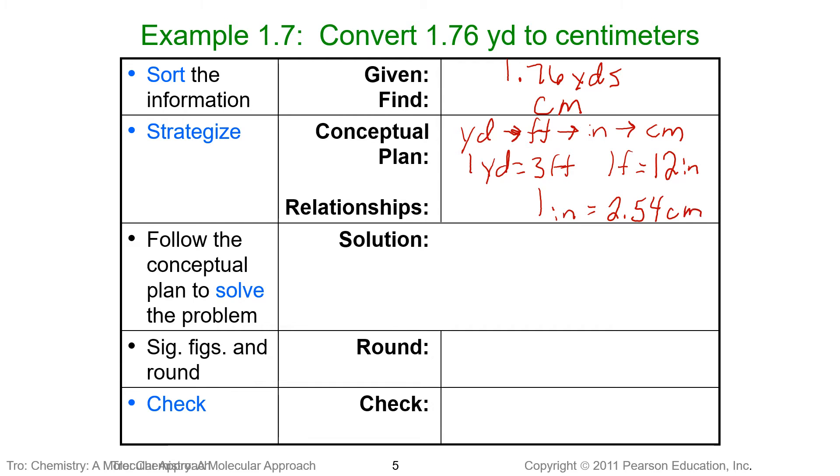Now we can use this to solve the problem. So 1.76 yards. We want the yards to cancel, so we need to put the one yard on the bottom, three feet on top. That way our yards cancel. We take the feet. We want the feet to cancel now because if we did our math, we would end up with our answer in feet. So we want it in centimeters, so we're going to keep going. So one foot is 12 inches. We cancel our feet because we have one on top, one on the bottom. And now we want to cancel our inches. So we put the inches on the bottom, 2.54 centimeters on top, our inches cancel.